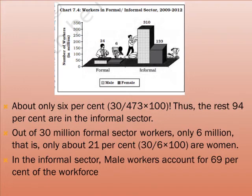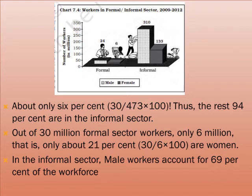We can see this chart. There are about 473 million workers in the country, as we have discussed earlier. There are about 30 million workers in the formal sector. Taking the percentage: 30 upon 473 into 100 — it is only 6%. So 6% of workers are in the formal sector, and the rest 94% are in the informal sector.